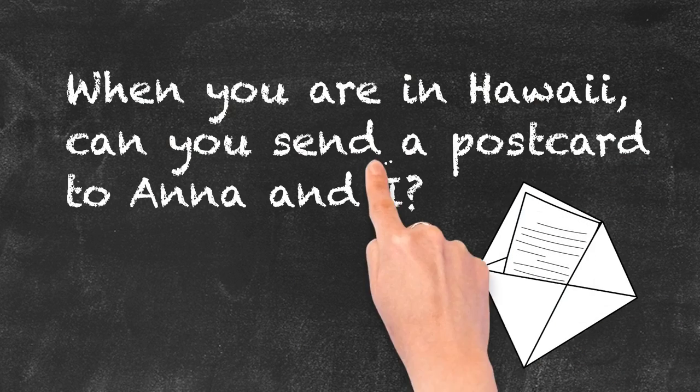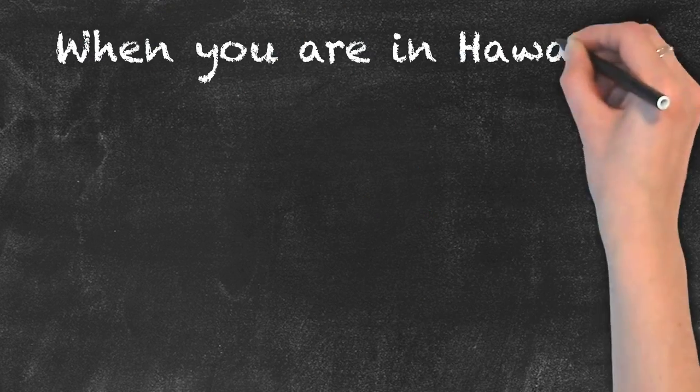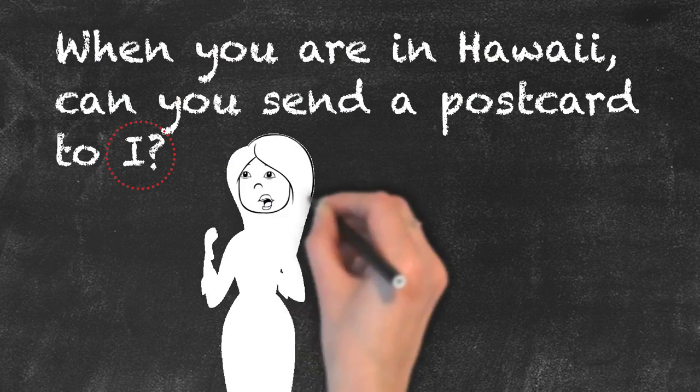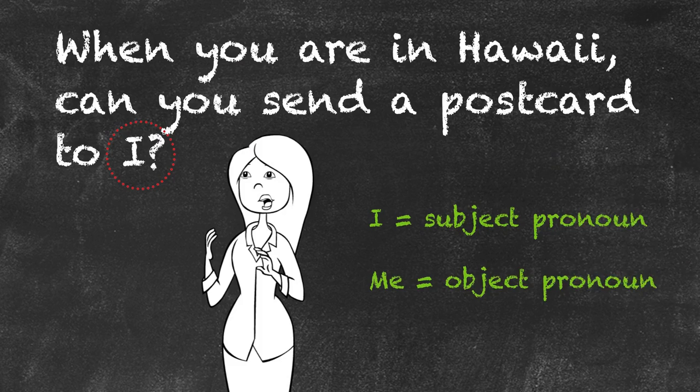to Anna and I? Nice try, but that's wrong. If we take Anna out of the sentence, it does sound weird, doesn't it? No one would say send something to I. I is a pronoun for subjects and it's not